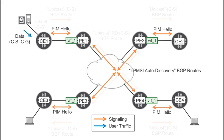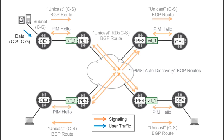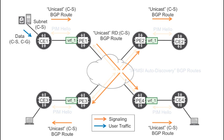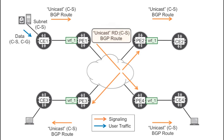There are changes at the unicast level too. As soon as you enabled MVPN in a VRF, all the unicast routes are re-advertised toward the multi-protocol IBGP peers.